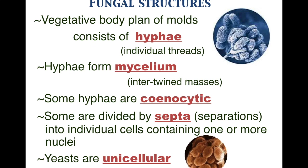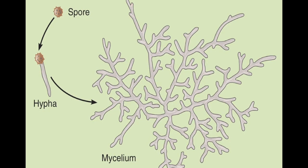Some hyphae can have more than one nucleus in them, and that would be coenocytic — as discussed when talking about protists such as Giardia. If any hyphae have walls that separate the nuclei, this is called septa. Yeast, used in baking bread, is unicellular. An individual spore creates an individual thread called hypha, and many hyphae intertwined together is called mycelium. If you ever ripped apart a mushroom, those many threads are called mycelia or mycelium.